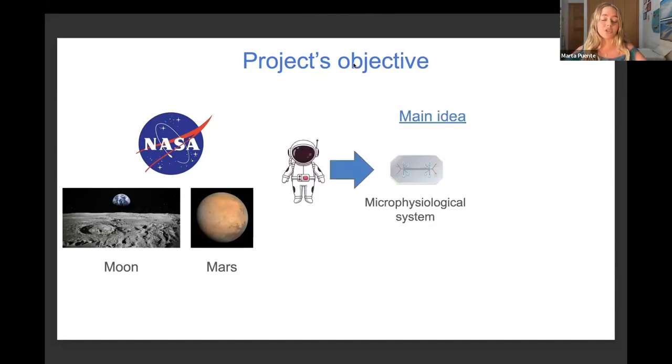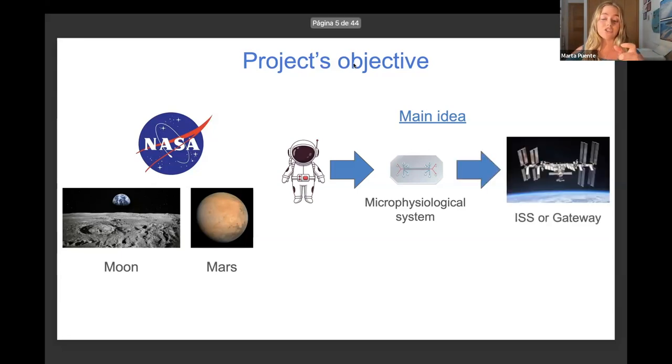So the main idea in which we have been working is to create a chip that can automatically cultivate cells that represent human organs. By sending this chip for a specific period of time to the International Space Station or the Gateway, we will be able to observe what kind of tissue and cellular damage this astronaut could experience.